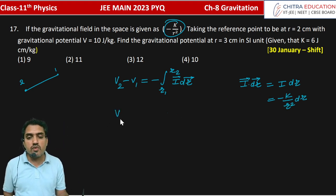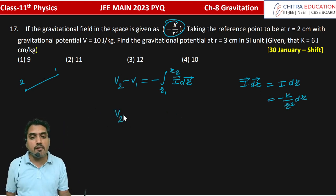Let's put all values. V2, the potential we have to find, minus V1, which is 10, equals minus integration...